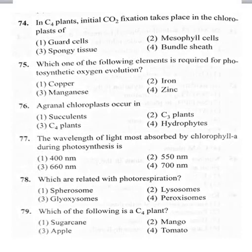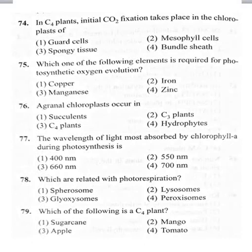C3 plants usually live in temperate regions, while C4 plants live in dry tropical regions. C4 plants can tolerate high temperatures compared to C3 plants. In C4 plants, more carbon dioxide is fixed than in C3 plants, and photorespiration is absent in C4 plants but present in C3 plants. Sugarcane is the best example of a C4 plant.